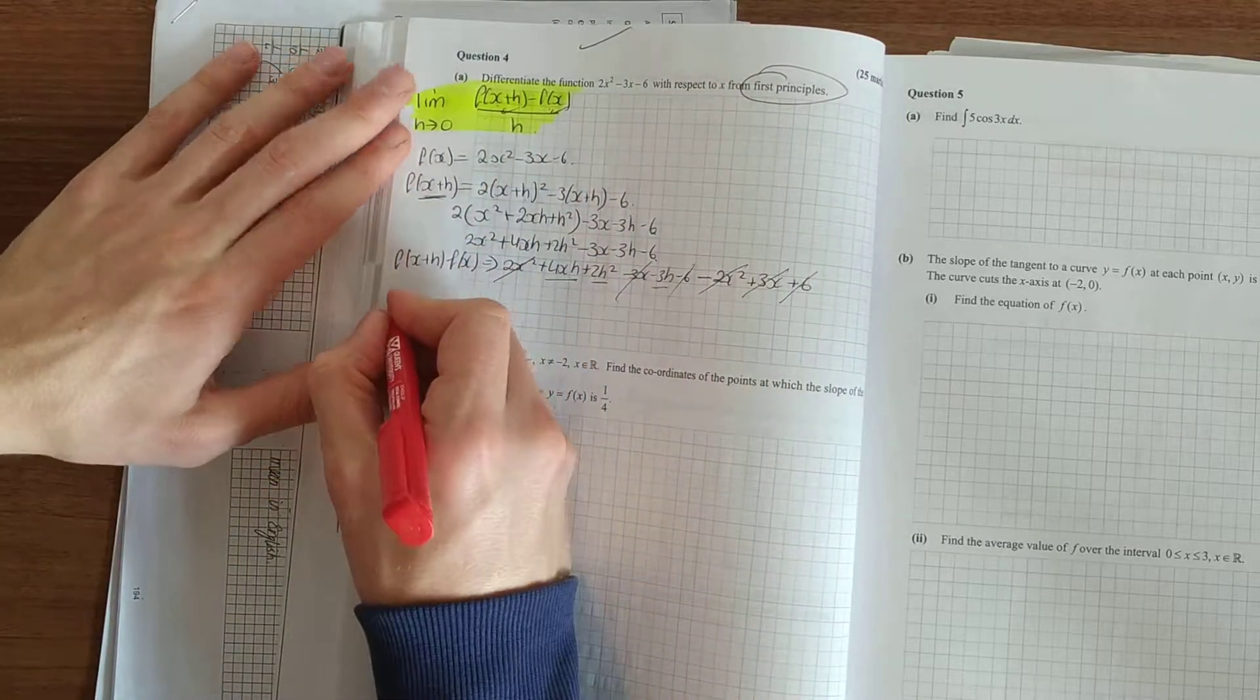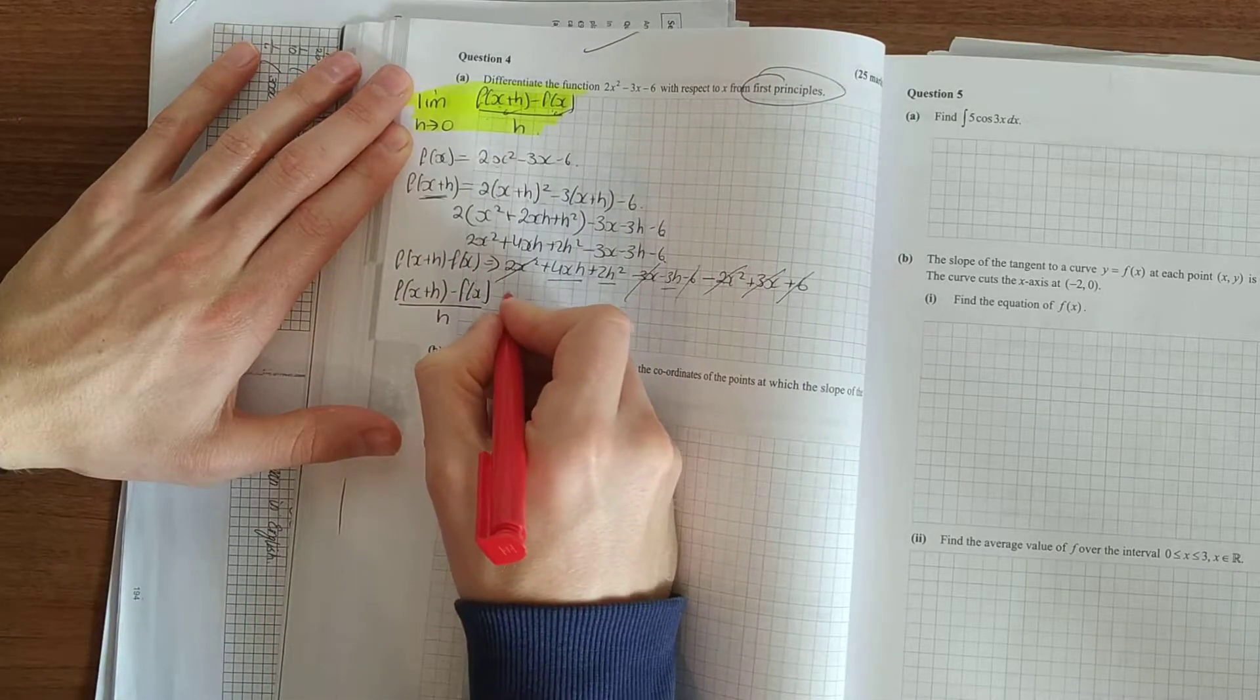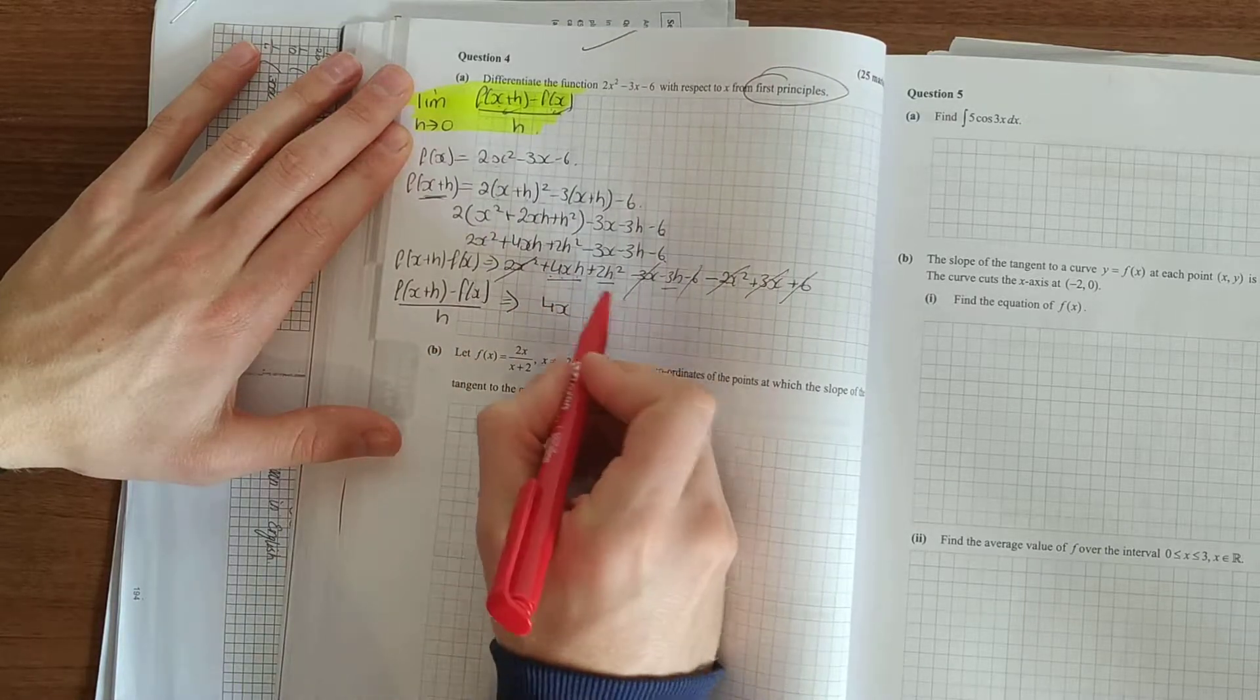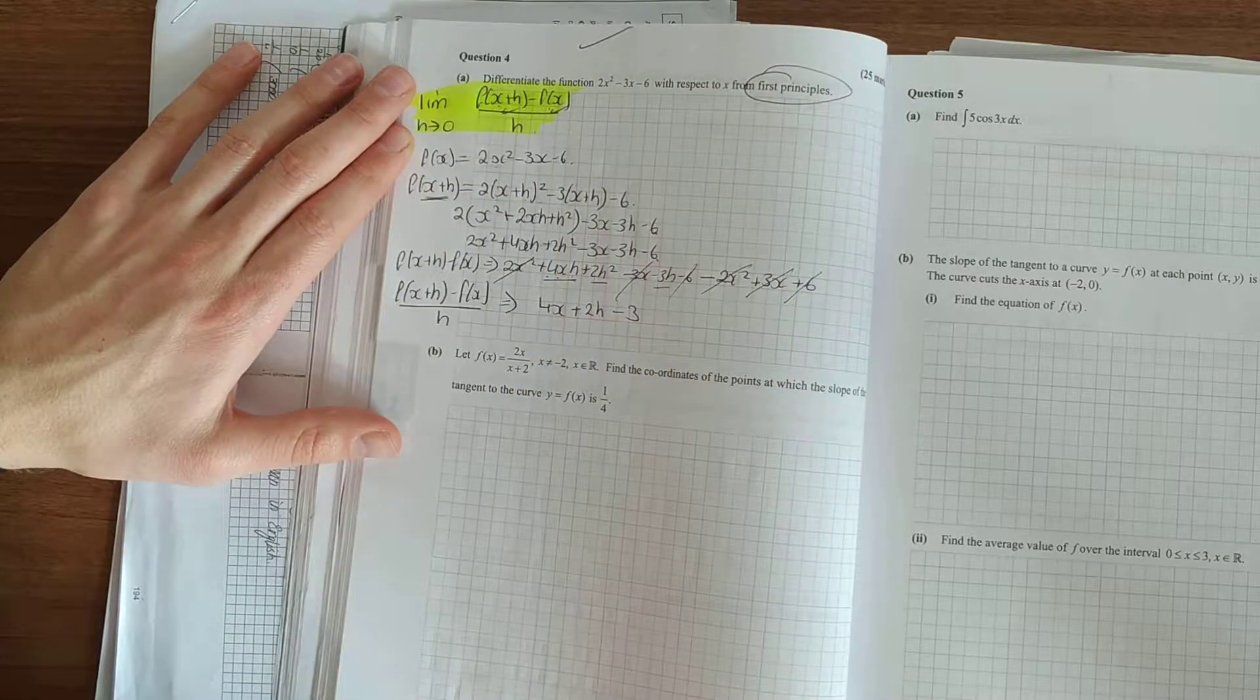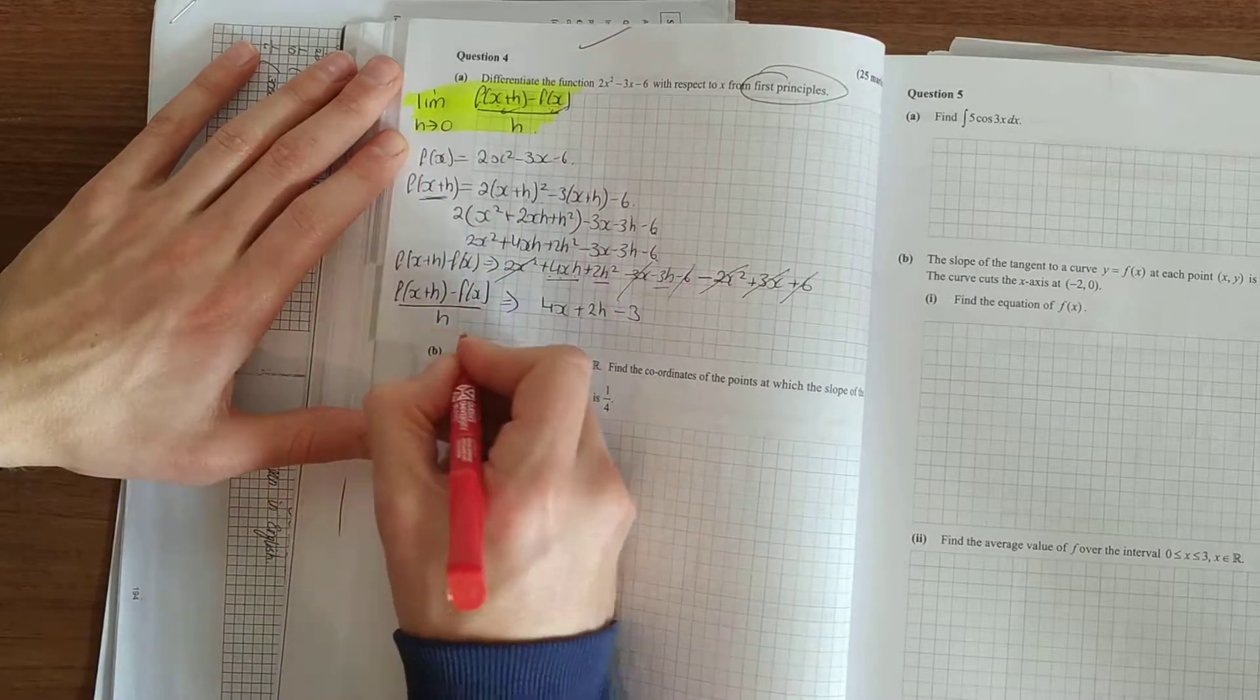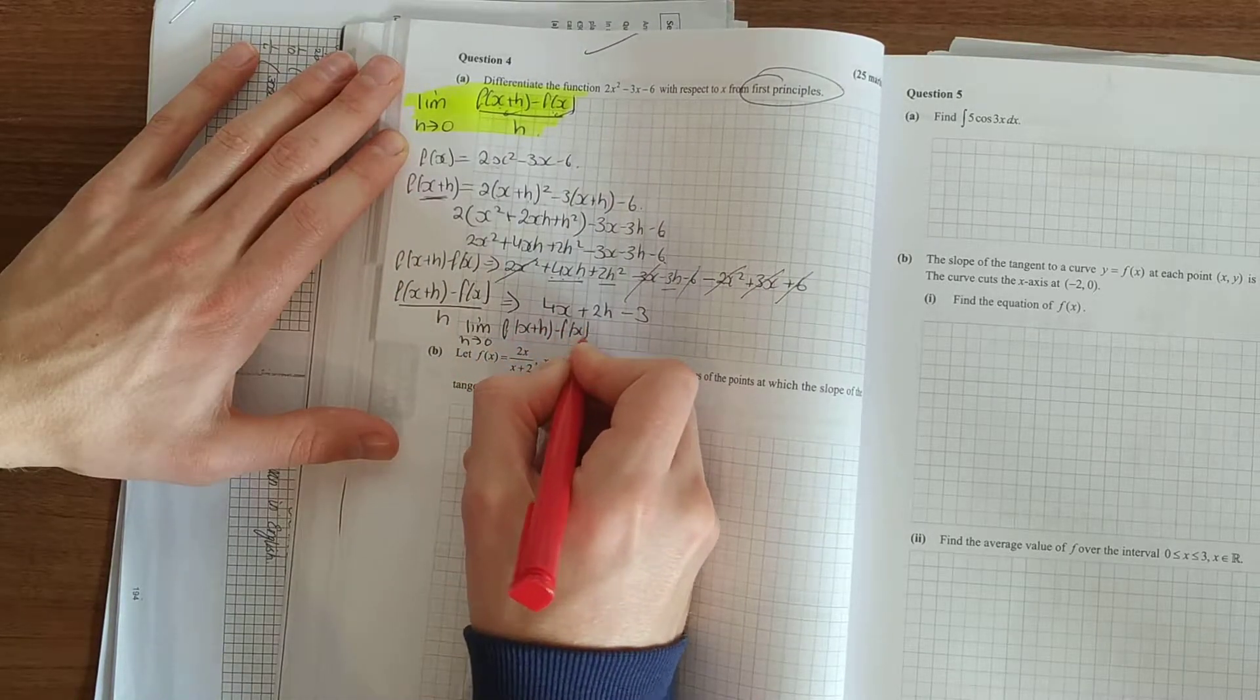Next thing divided by h. We've got a rush here. Use the football match on. So divide everything by h. And we have 4xh divided by h is 4x. 2h² divided by h. 2h. Minus 3. And that's it. And then the last thing. The limit is h goes to 0. That means sub in 0 for h.